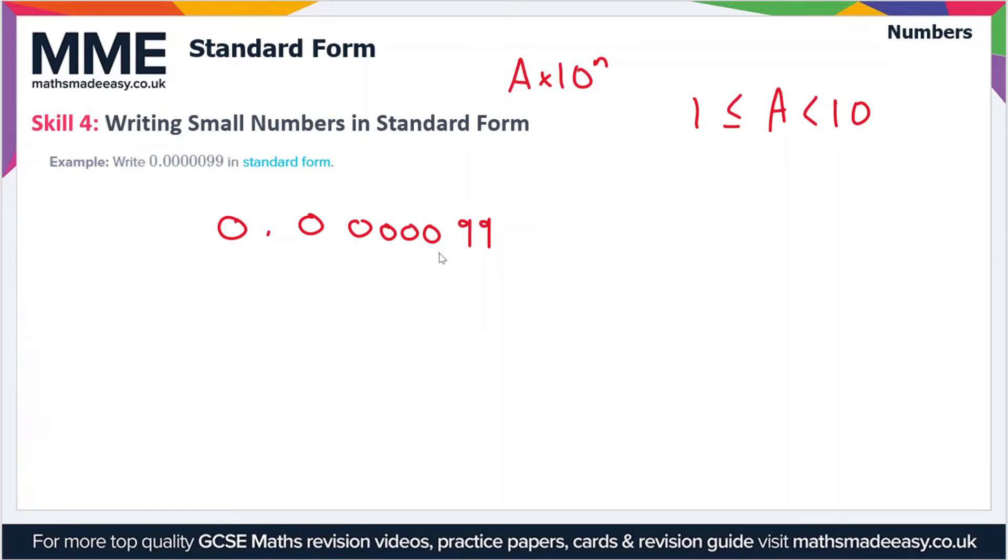Our value for A first of all is going to have to be 9.9, seeing as that's the only way we can get this between 1 and 10.